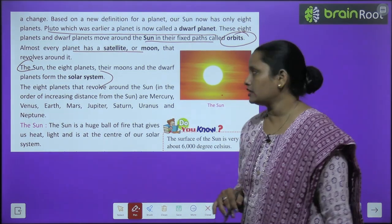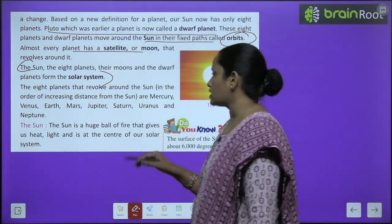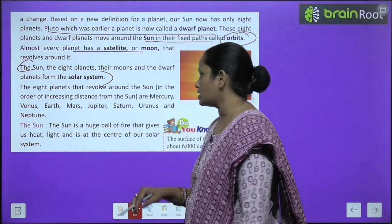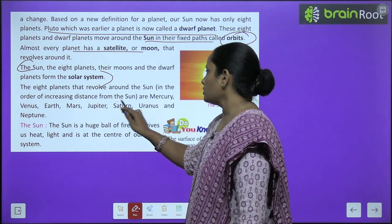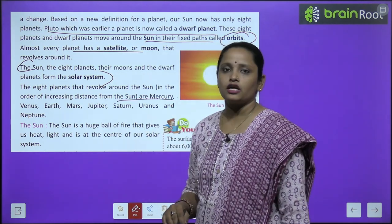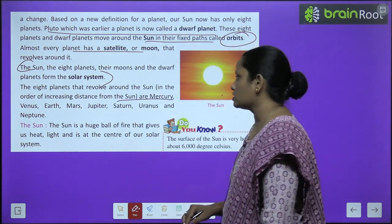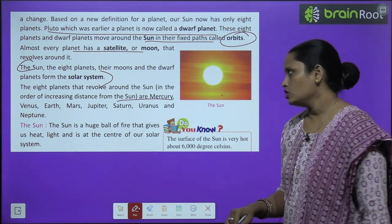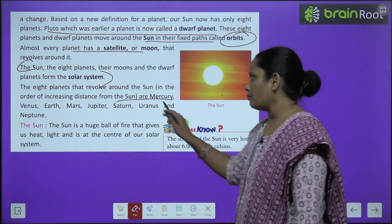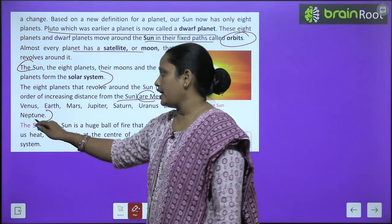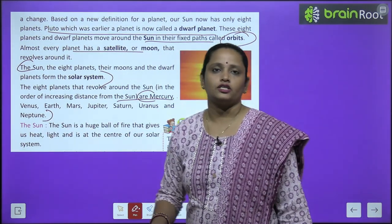The eight planets that revolve around the sun, in order of increasing distance from the sun, are: Mercury, Venus, Earth, Mars, Jupiter, Saturn, Uranus, and Neptune.